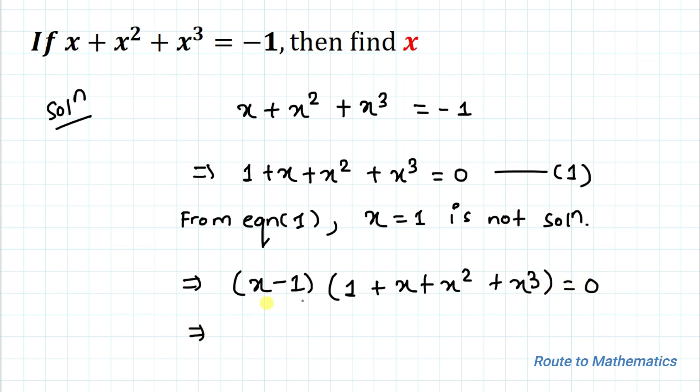Now multiplying each term we have x + x² + x³ + x⁴ - 1 - x - x² - x³ = 0. So x - x gets cancelled out. Similarly x² - x² and x³ - x³ get cancelled out.